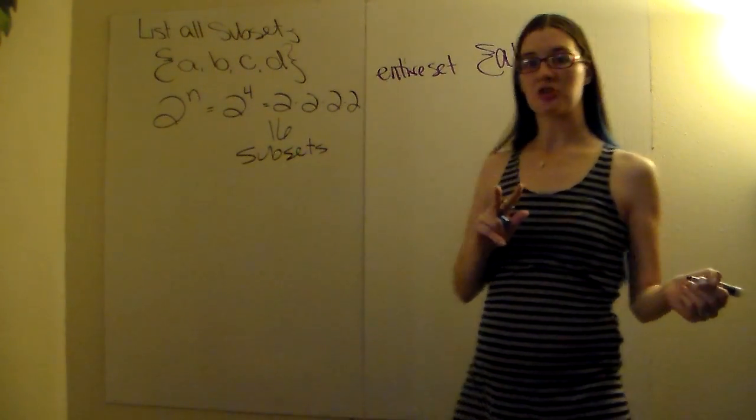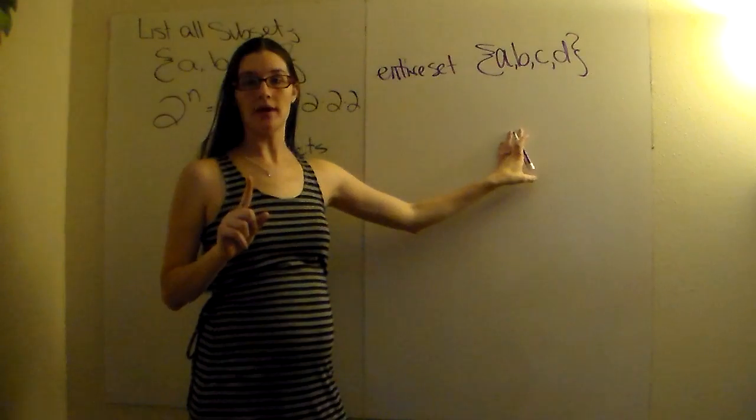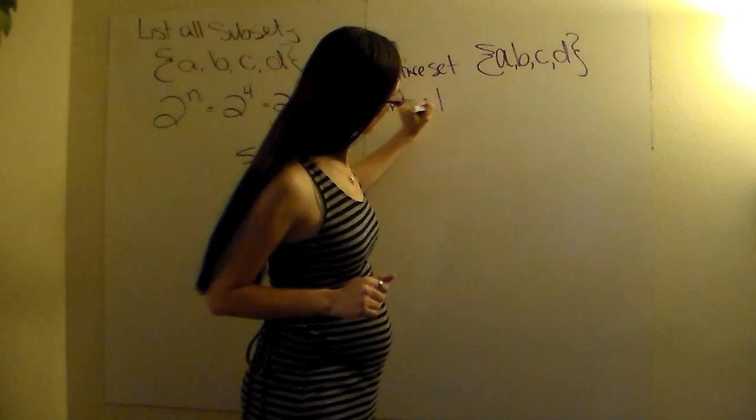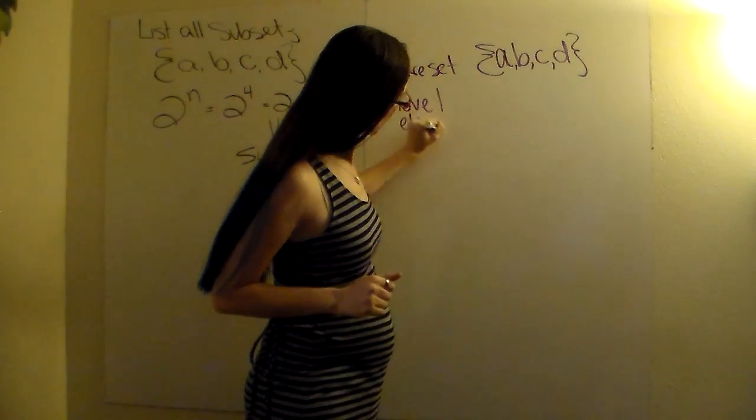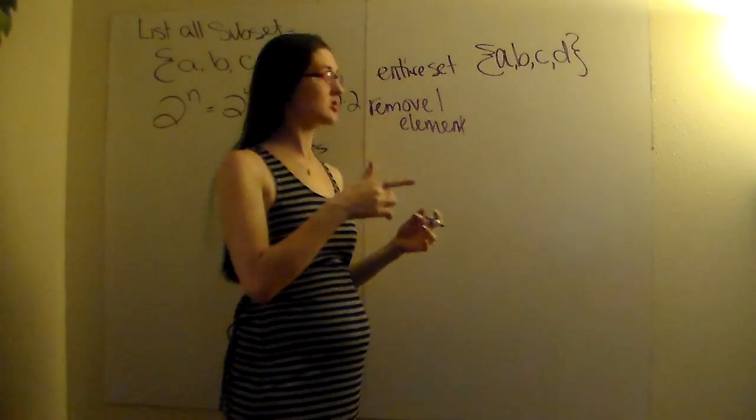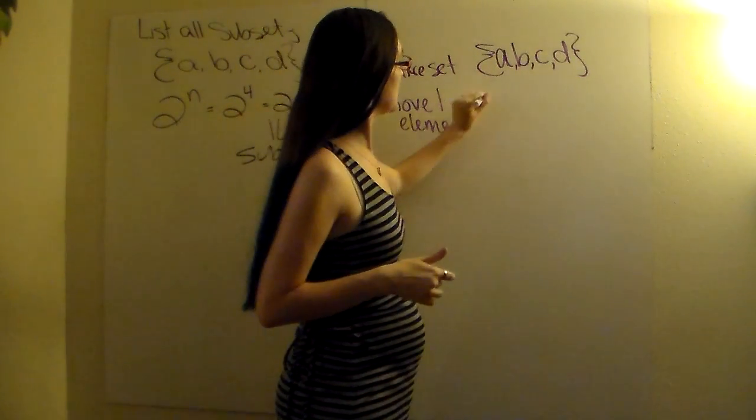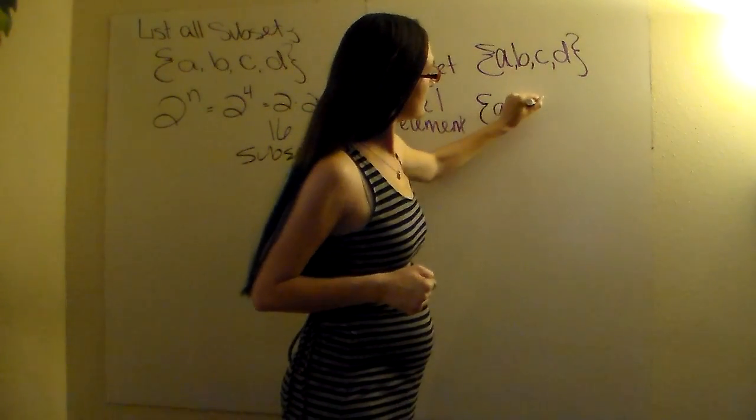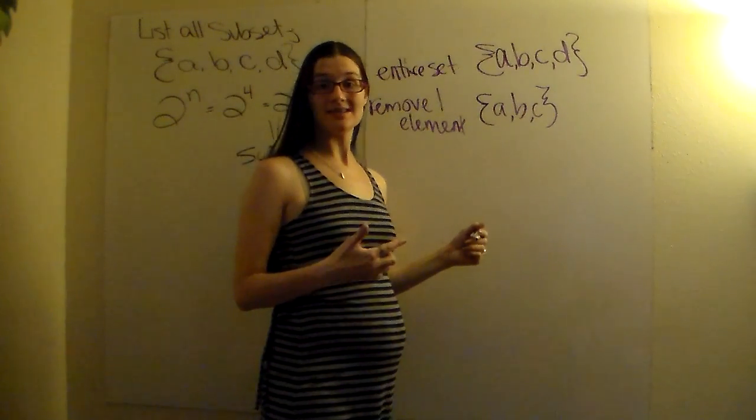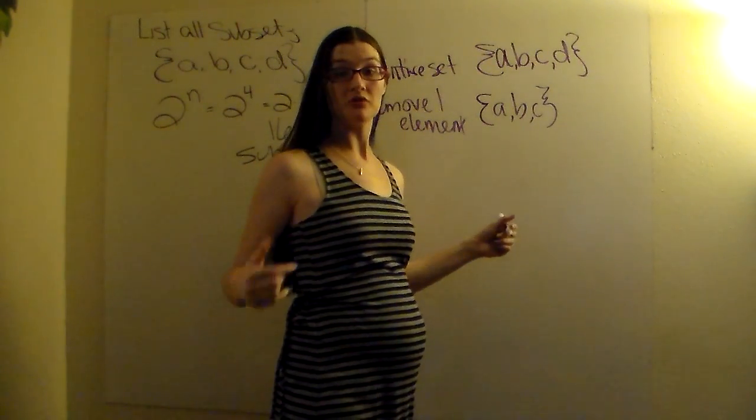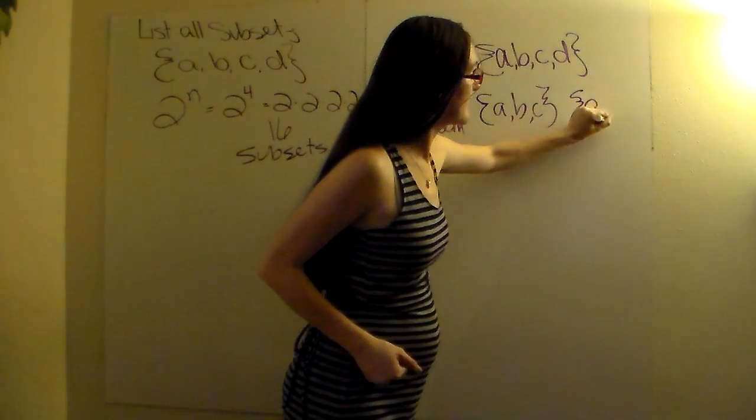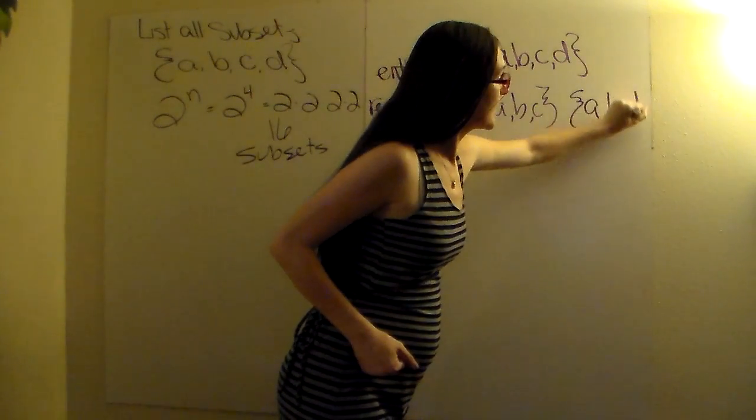Your second thing you're going to have is you're going to remove one element. I start with the last one and slowly work my way forward. So I'm going to remove D and have A, B, and C. Then for the next subset, I'm going to remove C. And you're going to continue on until you've removed every element from the set. So I'm going to remove C now. I have A, B, and D.